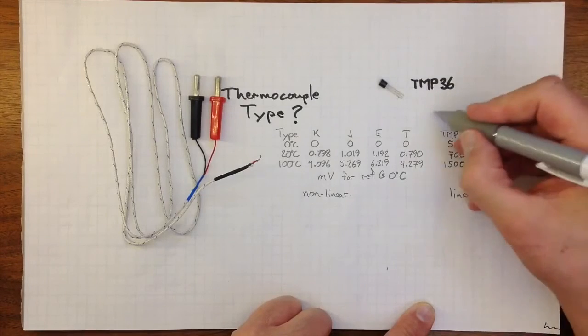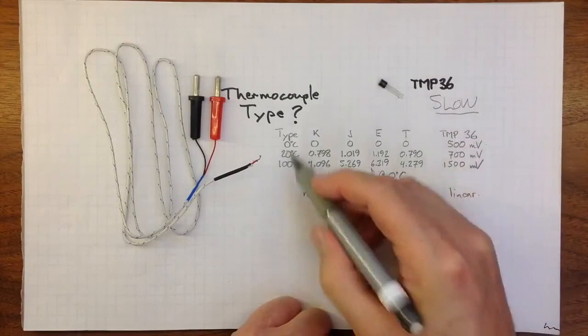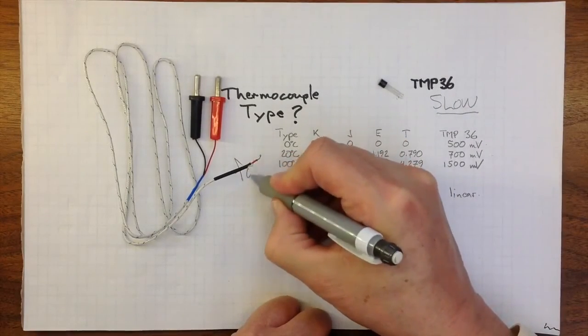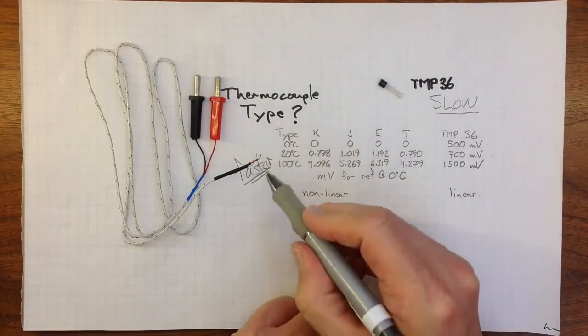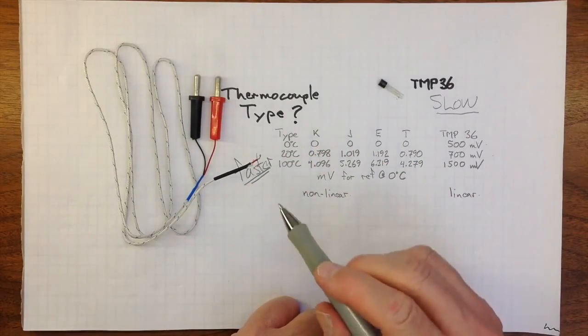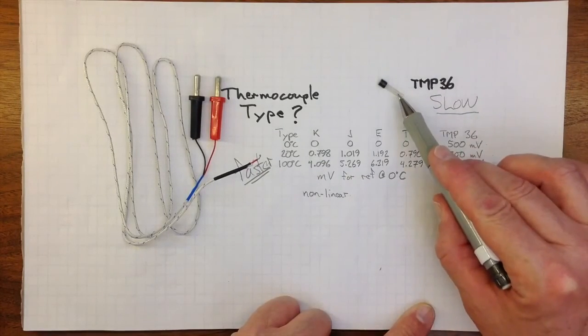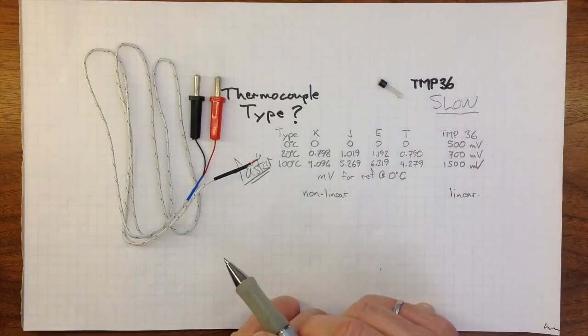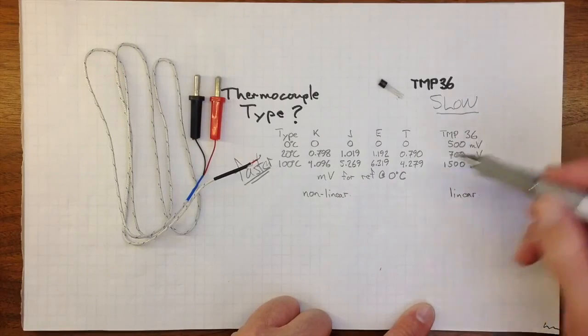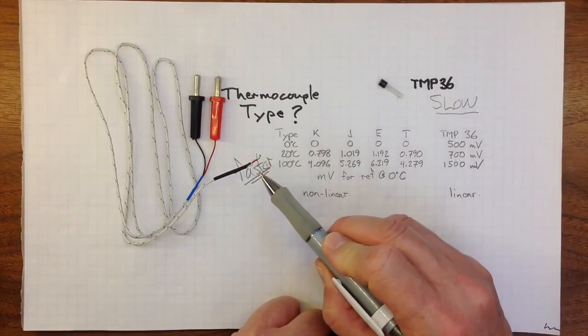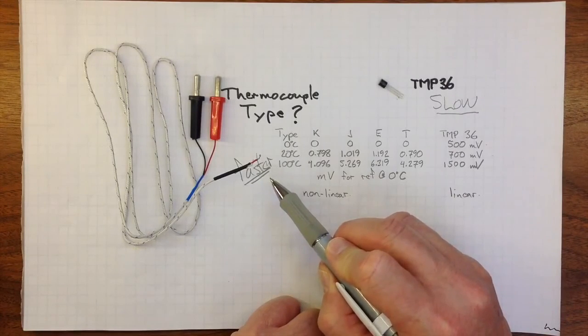So this TMP-36 will be slow compared to this thermocouple, which will be faster, but still take some time. And one of the things you want to figure out during this lab is how fast is fast, how slow is slow, and what consequences will that have for practical engineering design situations where you might want to use one of these sensors to monitor temperature while you're actively heating something up or cooling something down.